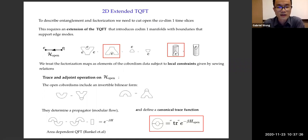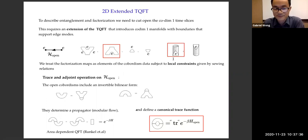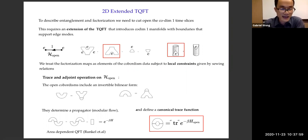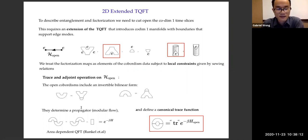Our way of thinking about factorization is that the factorization map is just some element of these cobordism data, subject to local constraints given by the sewing relations. This open string Hilbert space is what we call the open string Hilbert space on this interval. The string theory assigns this Hilbert space to the interval. It also has notions of trace and adjoint — the cobordisms giving us the trace and adjoint are half-annuli obtained from gluing the basic data. They correspond to an invertible bilinear form, and the zigzag relation says you can straighten this to get back the strip, which is the identity in TQFT.